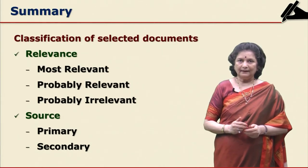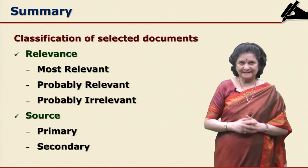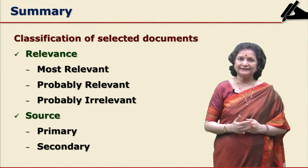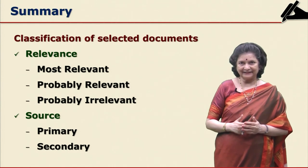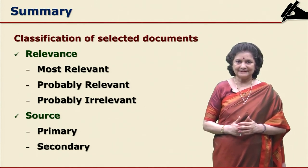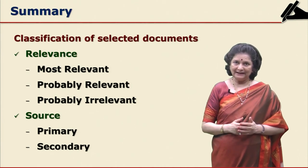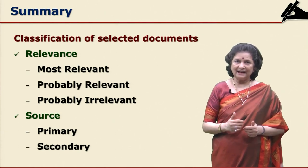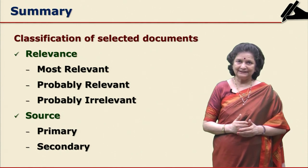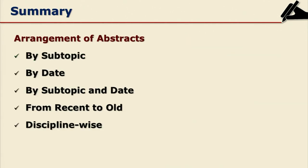To summarize: in this session we have seen the classification of selected documents — one by relevance (most relevant, probably relevant, and probably irrelevant) and second by source (primary and secondary). We have also seen the arrangement of abstracts by subtopic, by date, by subtopic and date combined from recent to old, and discipline-wise for interdisciplinary research.